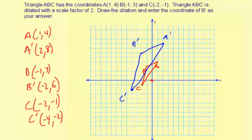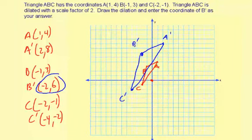And what are the coordinates of B'? That's the answer we're supposed to have here. B' is negative 2, 6. So enter in negative 2, 6 for your answer there.